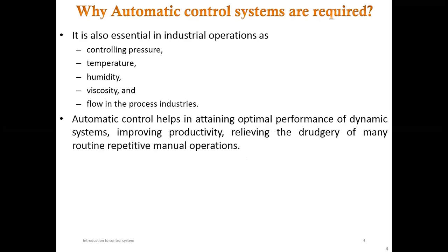Automatic control is also essential in industrial operations to control pressure in a boiler, temperature, humidity, viscosity of fluid, and flow in industrial processes. These are continuous systems which require continuous monitoring and continuous reception of data.